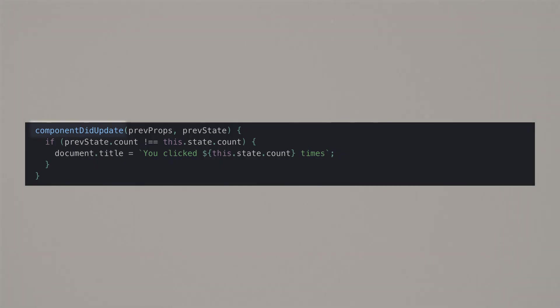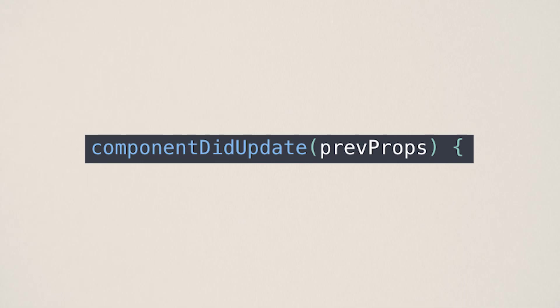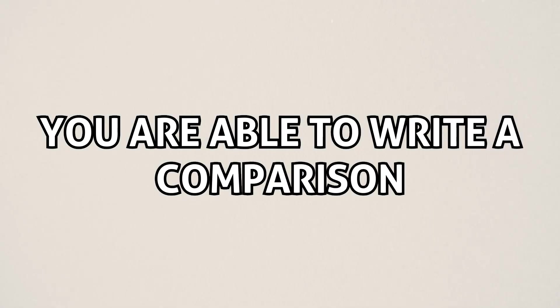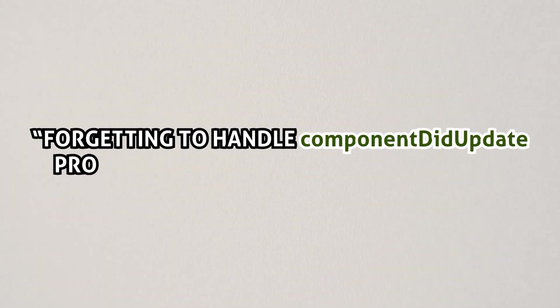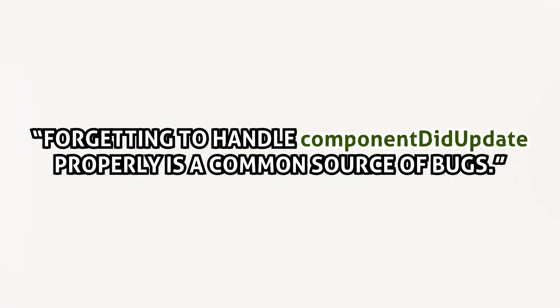With componentDidUpdate, you get the previous props and the previous state as arguments. You're able to write a comparison of what the props used to be and what they are now, and if they're different, you can trigger whatever changes you need to re-render. The React documentation itself says that forgetting to handle componentDidUpdate properly is a common source of bugs — that's how that bug is solved in class components.